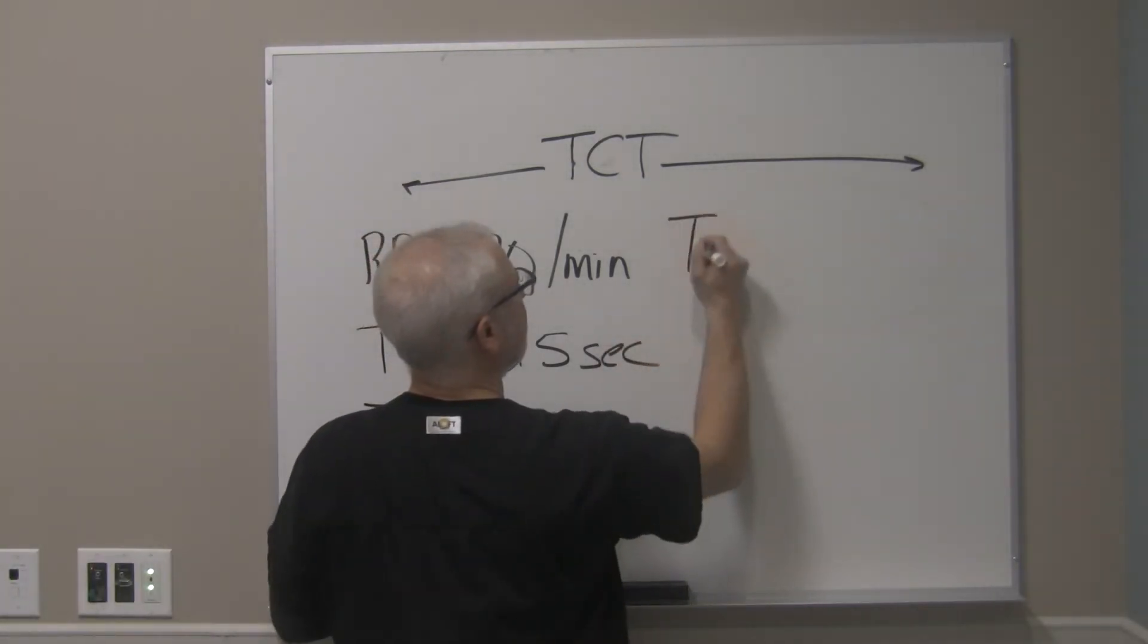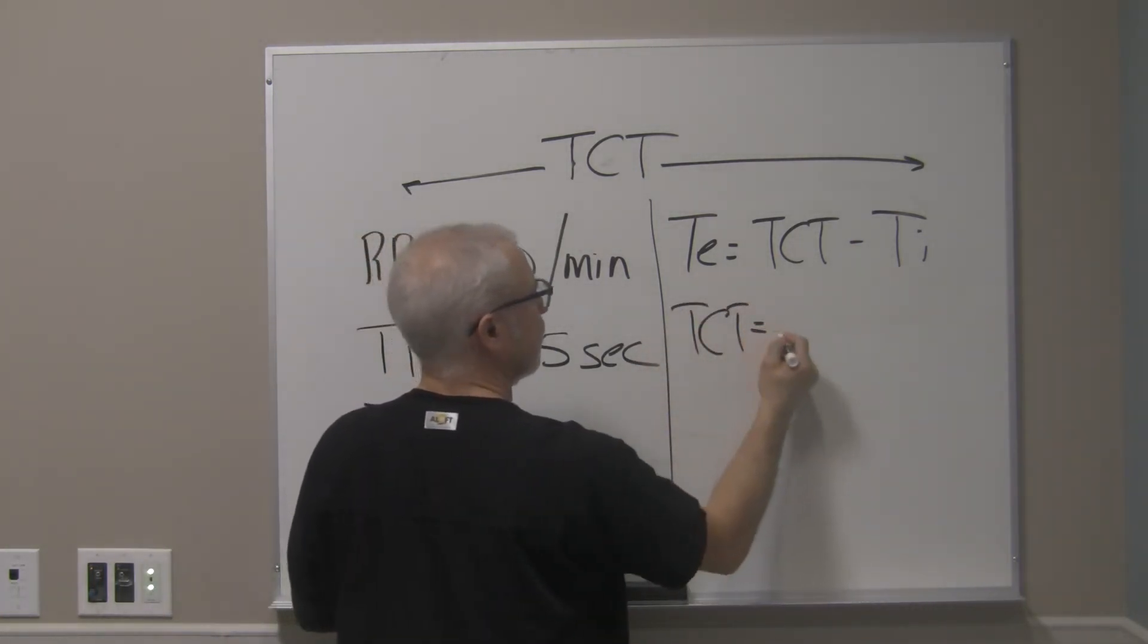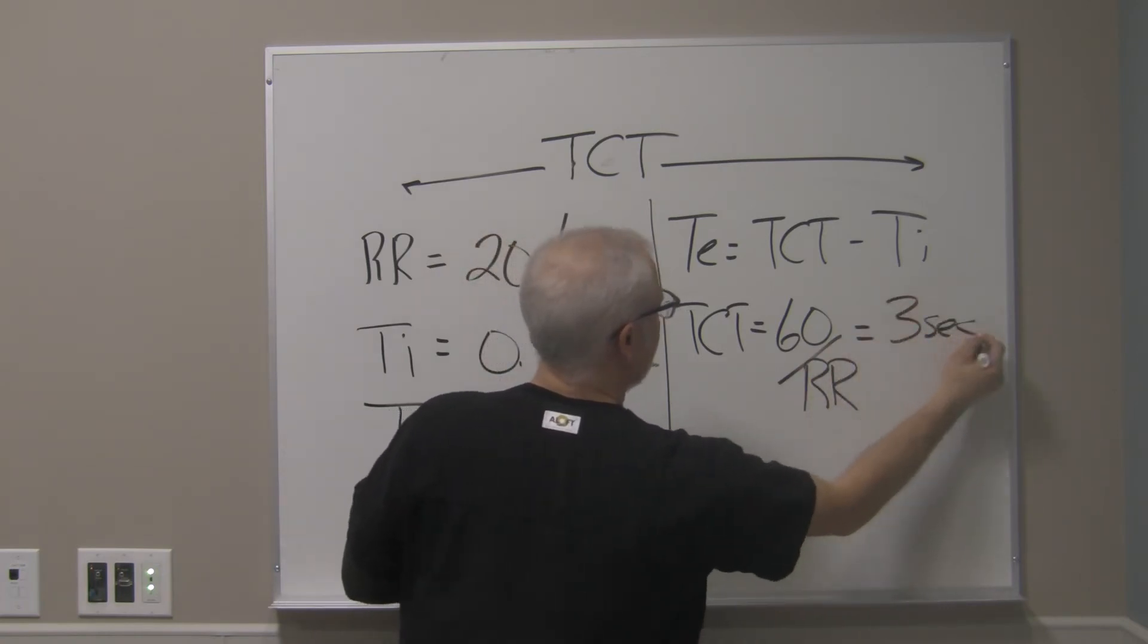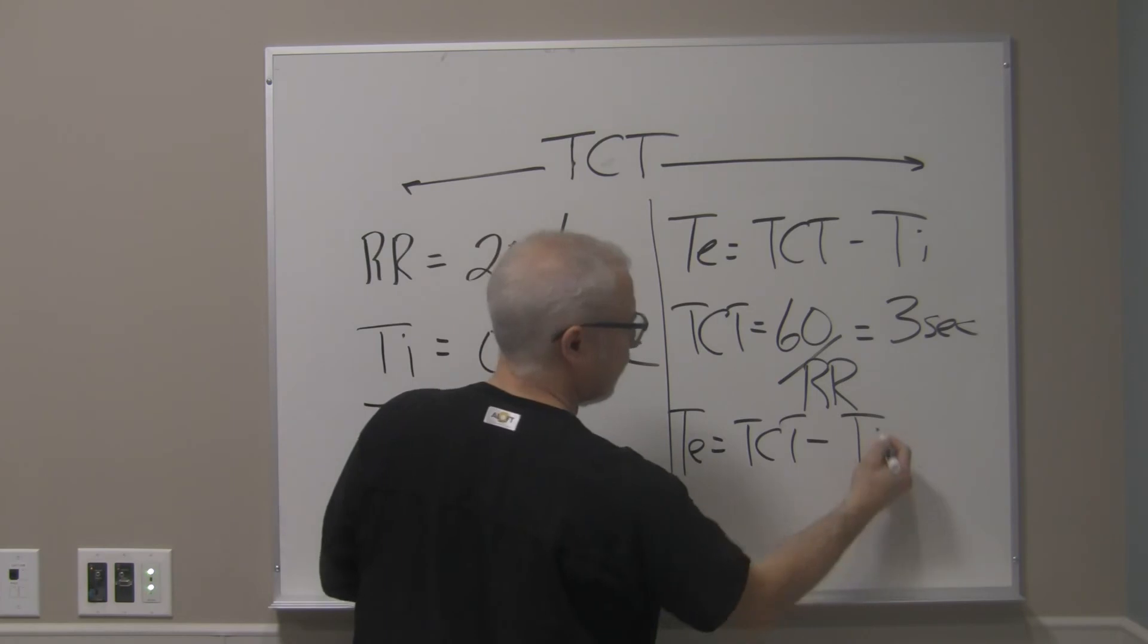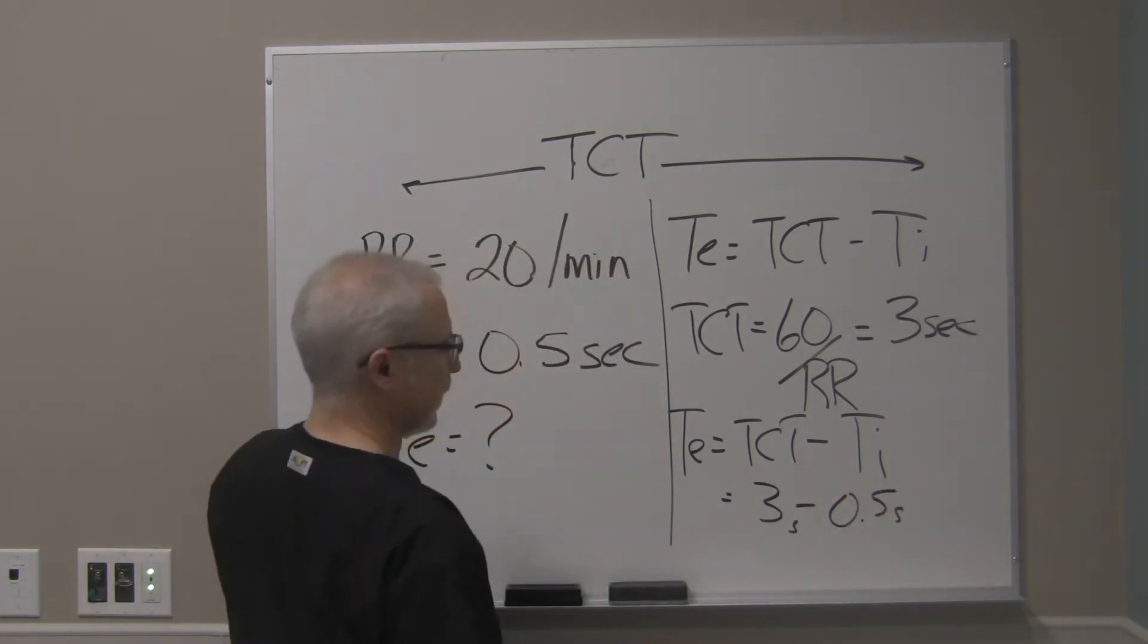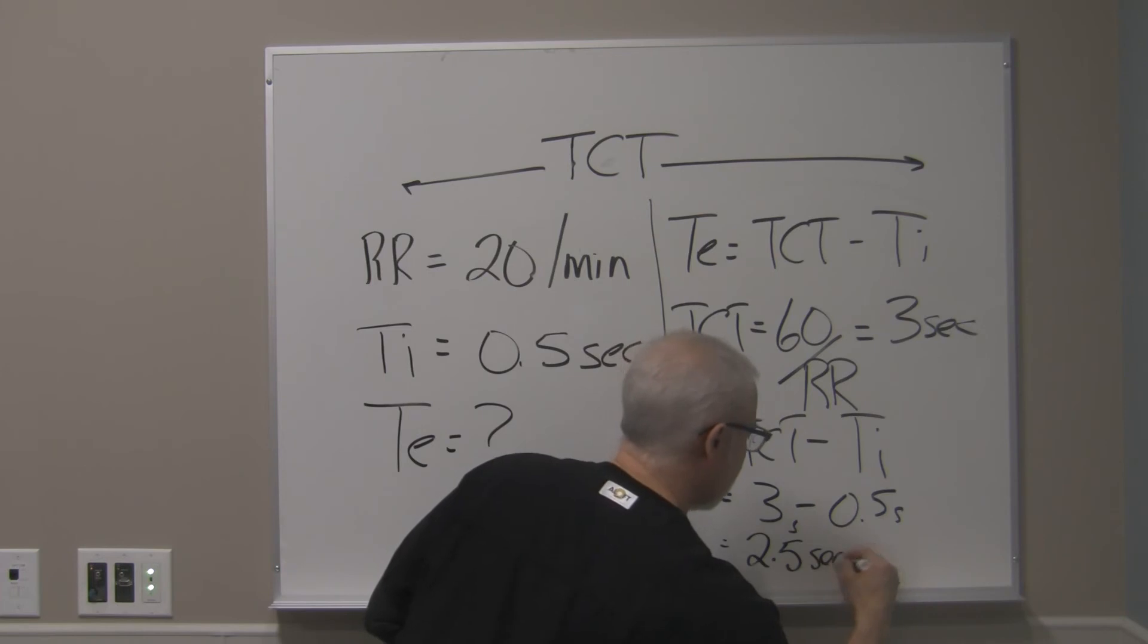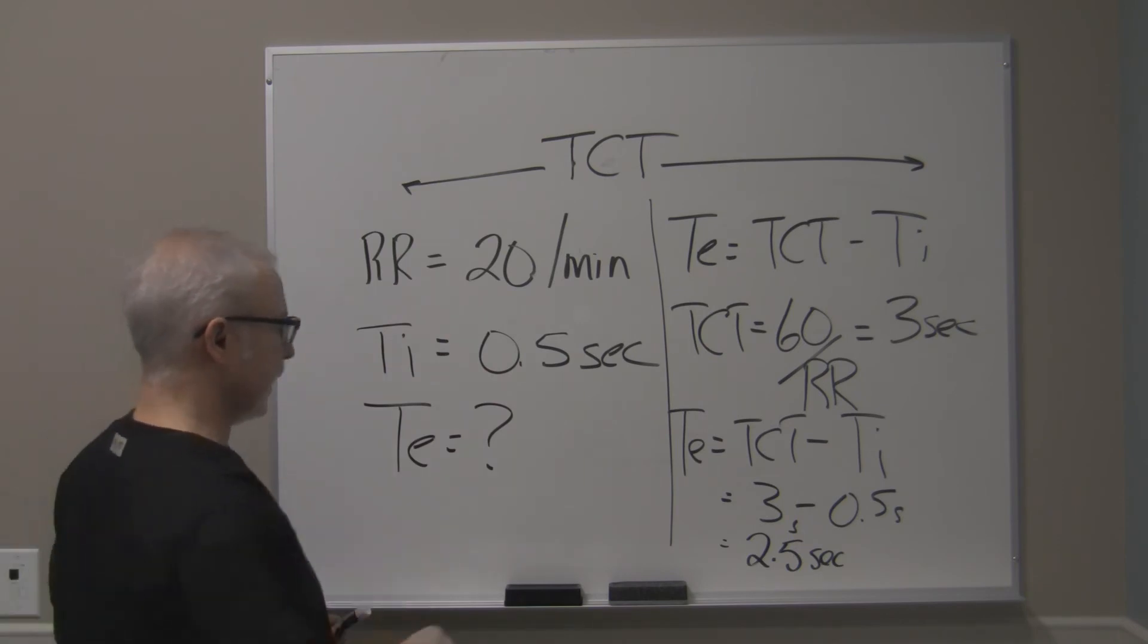So TE then would be equal to total cycle time minus TI. So again, our total cycle time is equal to 60 divided by the respiratory rate. So that's equal to 3 seconds. So then TE has to be equal to TCT minus TI, which is equal to 3 minus 0.5 seconds. We get a TE then equal to 2.5 seconds. So that's how you figure it out for TI and TE.